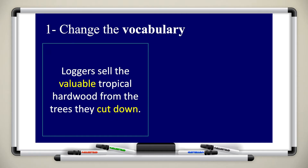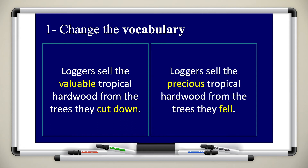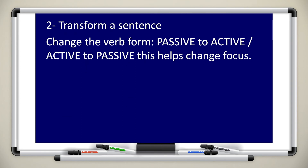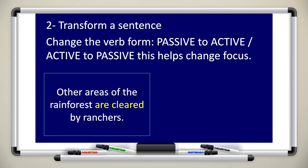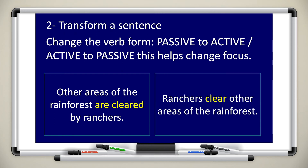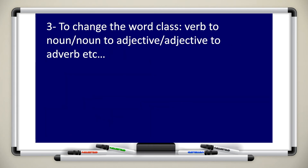Here's an example: 'loggers sell the valuable tropical hardwood from the trees they cut down' — I can say 'loggers sell the precious tropical hardwood from the trees they fell.' You can also transform a sentence by flipping active to passive or passive to active. For example, 'other areas of the rainforest are cleared by ranchers' becomes 'ranchers clear other areas of the rainforest.'